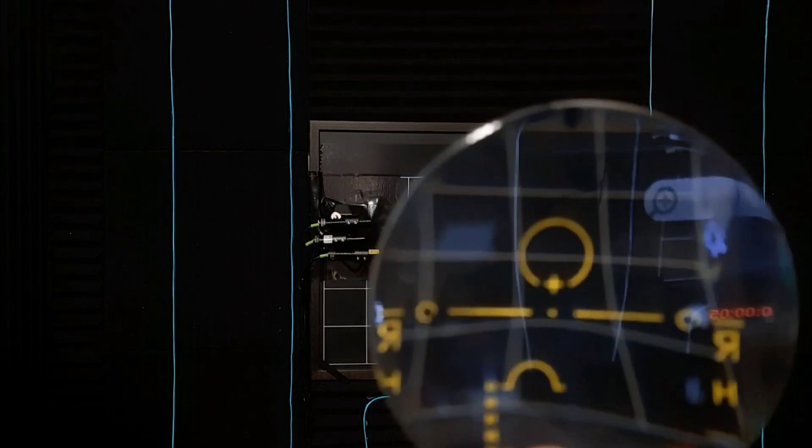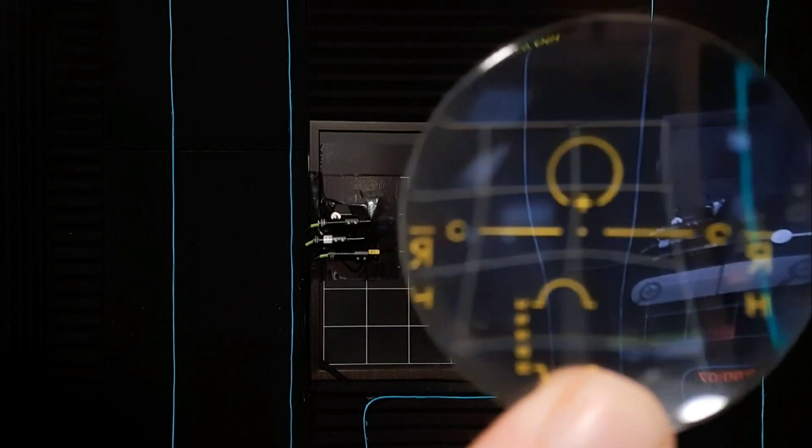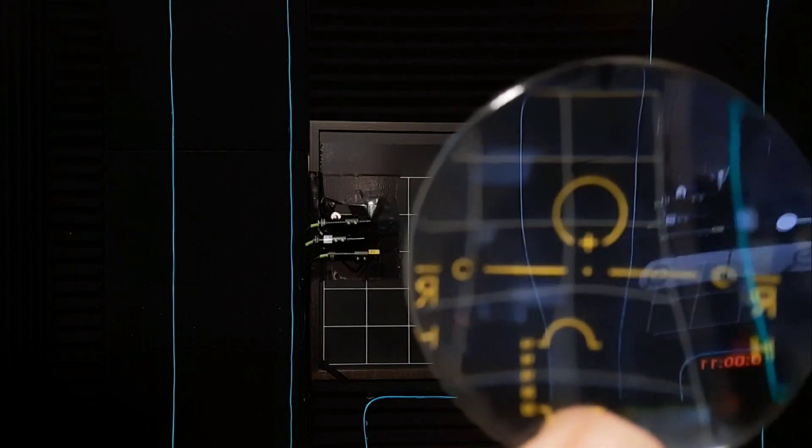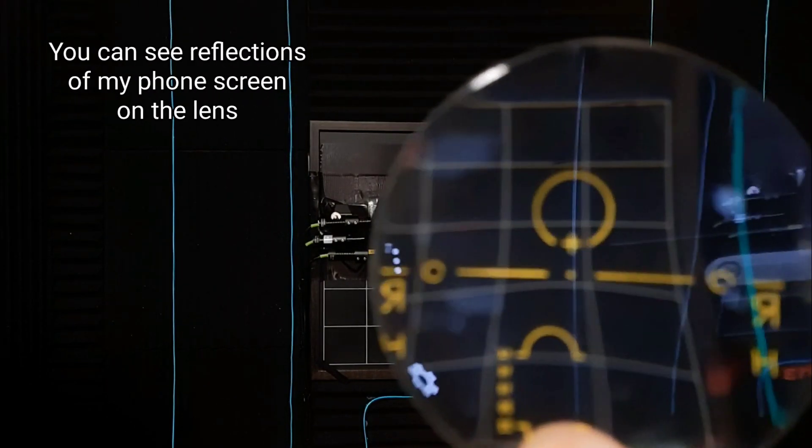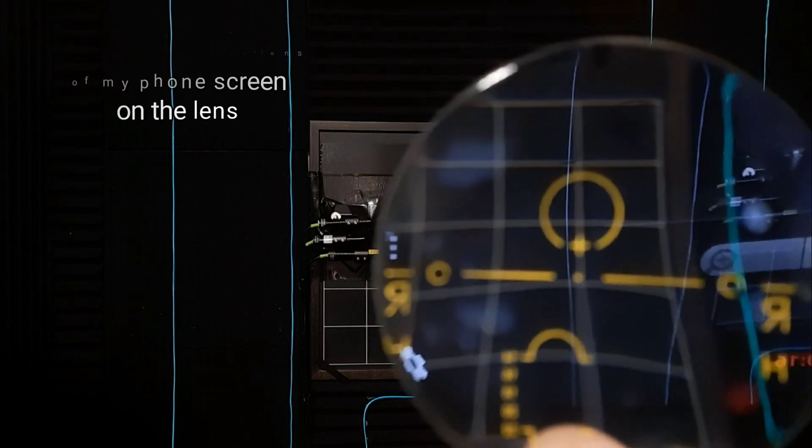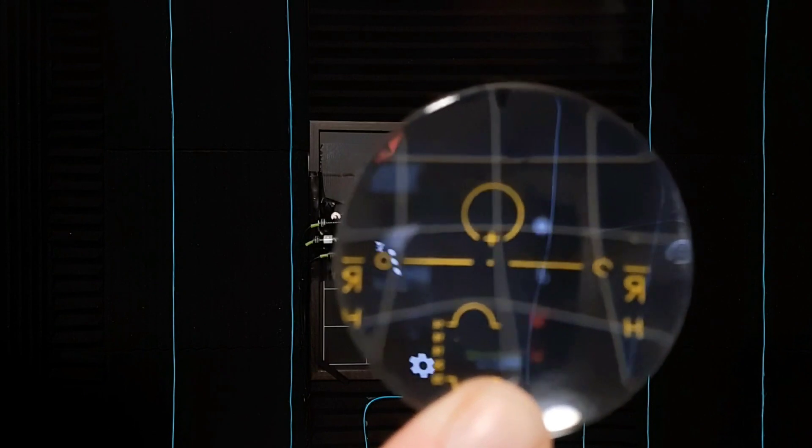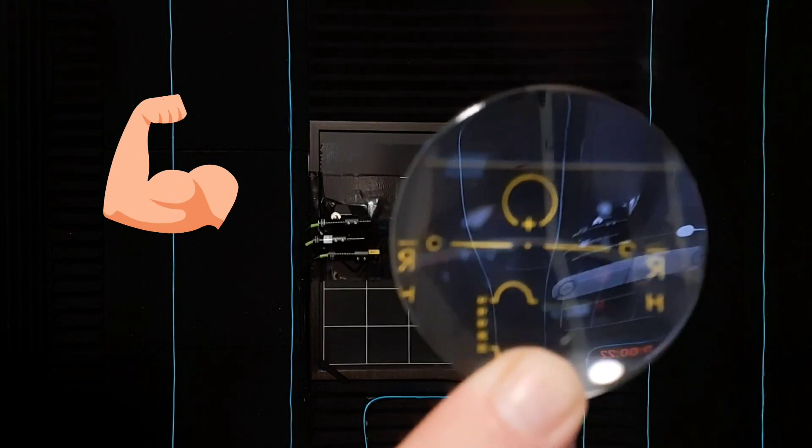The top of the lens is similar to one of those single vision lenses, while the bottom transitions to be more like a powerful lens for nearsightedness. You'll see that as I move this lens around, the lines closest to the bottom of the lens get bent more than the lines closer to the top. That's because that stronger part of the lens is on the bottom.